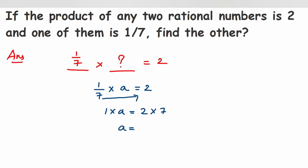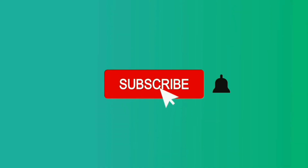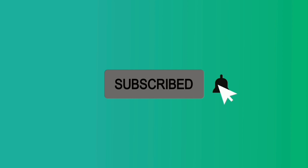So a = 2 × 7 = 14. The other number is 14. I hope you understood. If you have any questions or doubts, leave a comment below. Thank you so much for watching — if you liked this video, subscribe and click the like button.